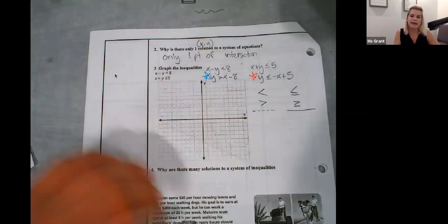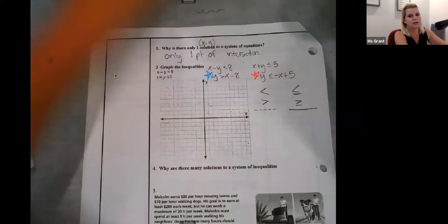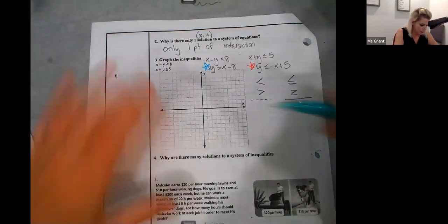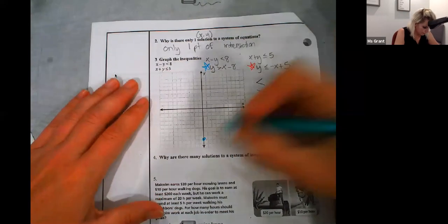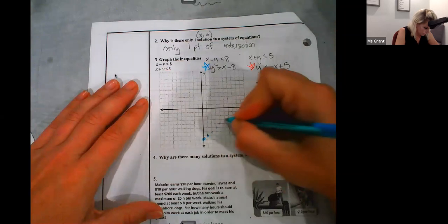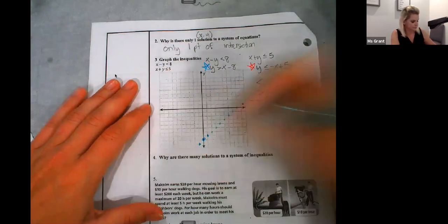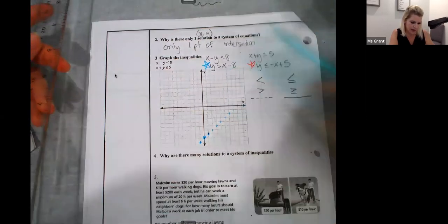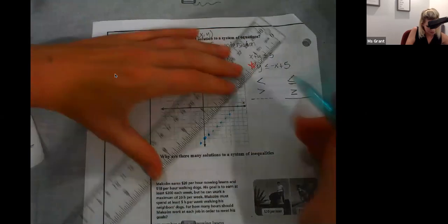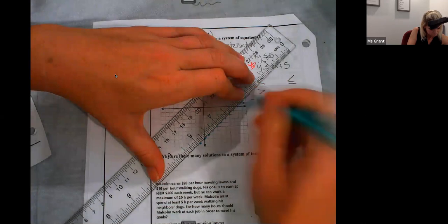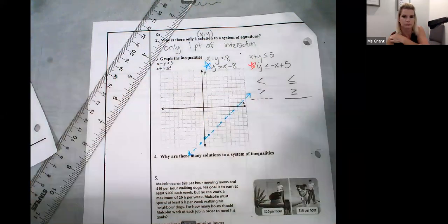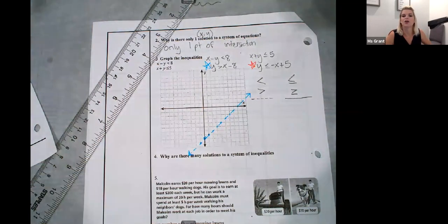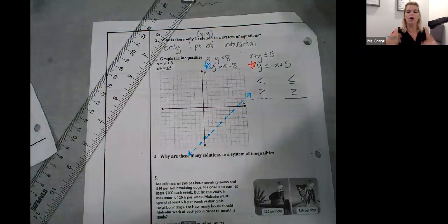Let's start with this blue. Begin at negative 8. My slope is 1. Rise 1, run 1. Now, this symbol just says greater than, which means it's going to be a dashed or dotted line. So, you're going to make a dashed or dotted line. The shading says greater than. I need to shade greater than this line. Greater, above, more, higher. That's here.